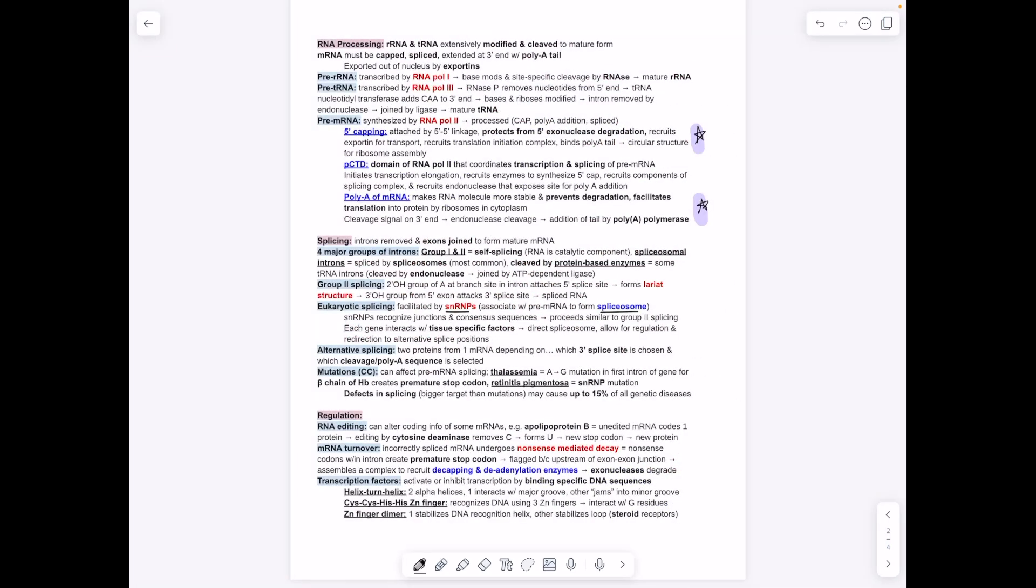Once you have your pre-RNA made, it still needs to be 5' capped. It needs to have the introns spliced out. We remember that introns stay in the nucleus, exons exit the nucleus. We need to splice out the introns so they stay in the nucleus, and then the exons will be squished together and kept. We cap it, which protects it from exonuclease degradation, recruits exportin for transport. We have the splicing of the introns out to keep the exons, and then we add a poly-A tail by poly-A polymerase. Again, it protects from endonuclease cleavage.